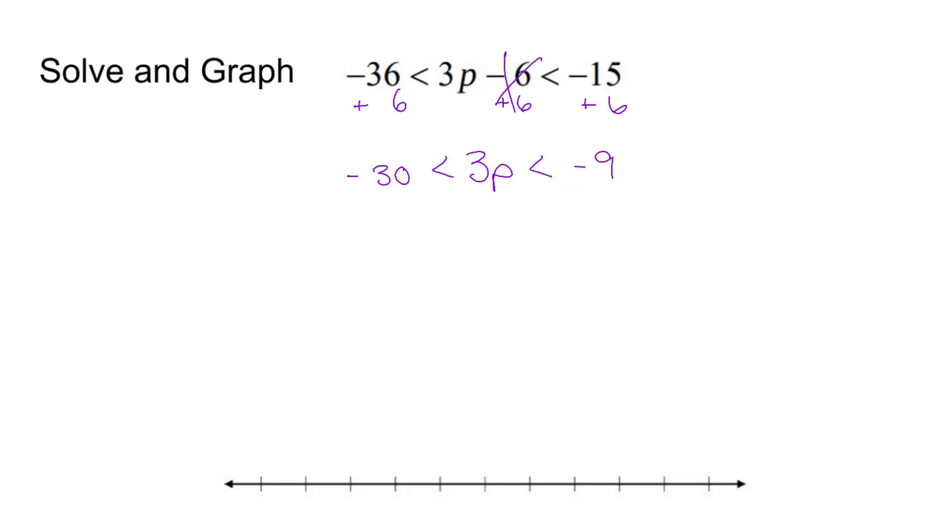Now is p alone yet? Nope. Let's divide everything by 3. Cross you out. p is now alone in the middle. Negative 30 divided by 3 is negative 10. Negative 9 divided by 3 is negative 3.